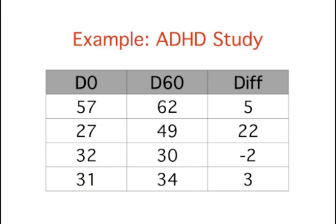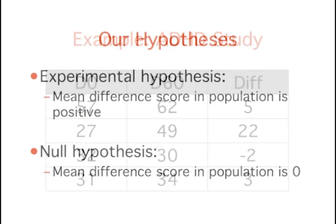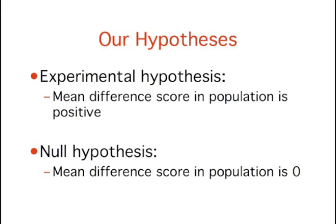Notice that difference scores are shown here in the last column. When children perform better in the high dosage condition than in the placebo condition, the difference score is positive, and when children perform better in the placebo condition than in the high dosage condition, the difference score is negative. If the drug has a positive effect and improves performance on the delay of gratification task, then the mean difference score in the population will be positive. If the drug has no effect, then the mean difference score in the population is zero. This is the null hypothesis.